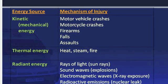If the energy source is kinetic, such as mechanical energy, examples of kinetic energy include motor vehicle collisions, motorcycle crashes, firearms, falls, or assaults. Thermal energy sources include heat, steam, and fire. Radiant energy sources include rays of light from sun rays, sound waves from explosions, electromagnetic waves such as x-ray exposure, and radioactive emissions such as nuclear leaks.